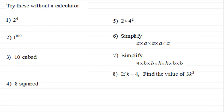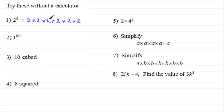The first one: two to the power six. This is shorthand for two repeatedly multiplied by itself six times. Two times two is four, four times two is eight, eight times two is sixteen, sixteen times two is thirty-two, thirty-two times two is sixty-four. So two to the power six is sixty-four.